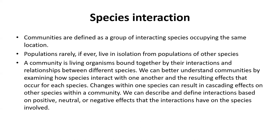A community is living organisms bound together by the interactions and relationships between different species. We can better understand communities by examining how species interact with one another and the results of these interactions. For example, changes within one species can result in cascading effects on other species within a community. We can describe and define interactions based on positive, neutral, or negative effects that the interactions have on these species.